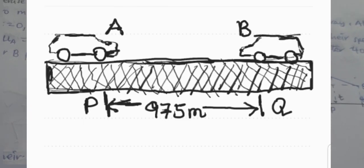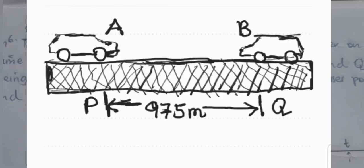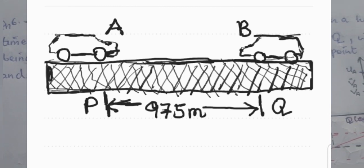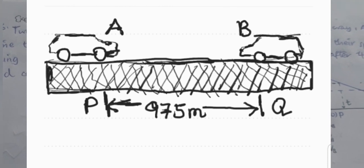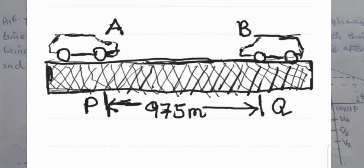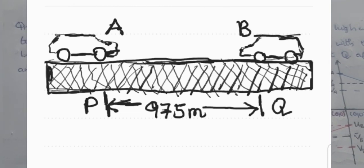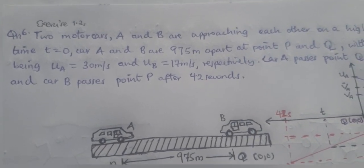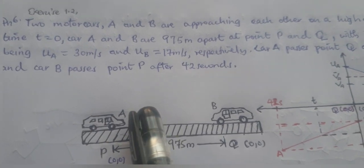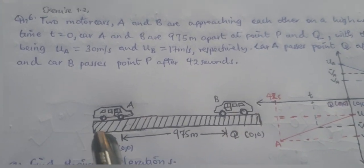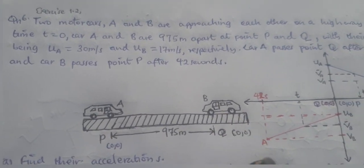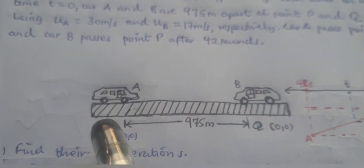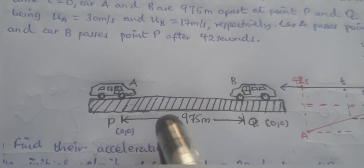Hello guys, I'm a teacher. Let us take a look at question number 60, Exercise 1.2, the topic of vectors from the TIDE 2022. Let us consider the cars below: car A and car B with respect to point P and point Q. These two cars are separated by a distance of 90-75 meters.